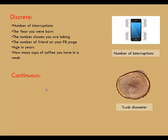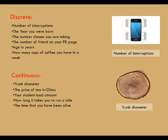Examples of continuous quantitative variables would be trunk diameter, as well as the price of tea in China, your student loan amount, how long it takes you to run a mile, and the time that you've been alive.